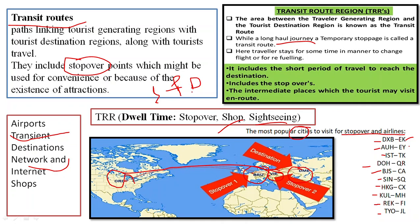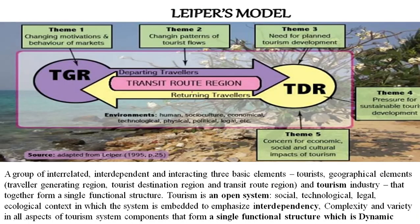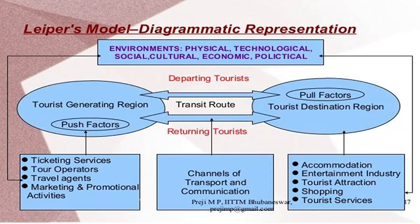To summarize, Leiper's Tourism System is an open system with five interdependent elements: the tourist (human element), the tourism industry (industrial element), and three geographical elements — TDR, TGR, and TRR. It is dynamic, interacts with external PESTEL factors, and all elements perform a single interconnected function. Push factors in TGR drive travel, pull factors in TDR attract visitors, and TRR provides the connecting route.